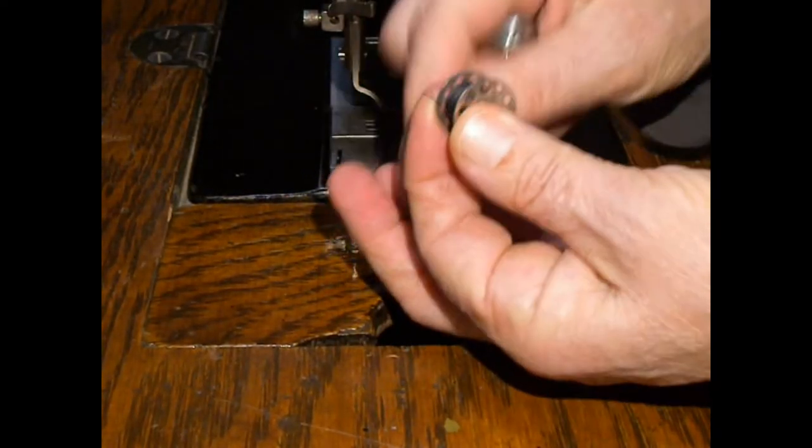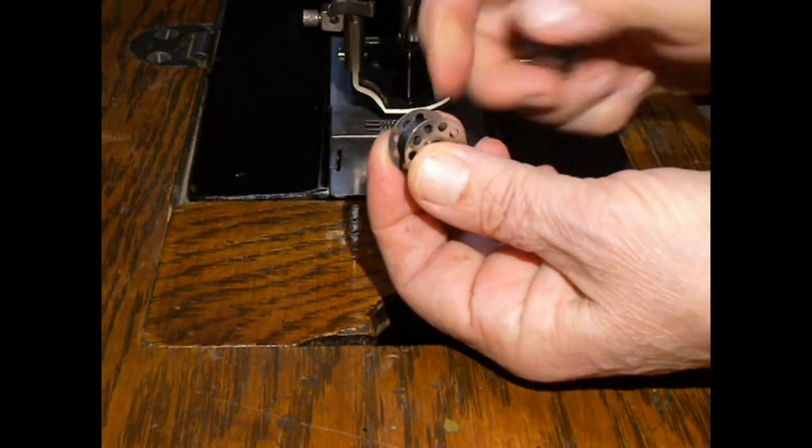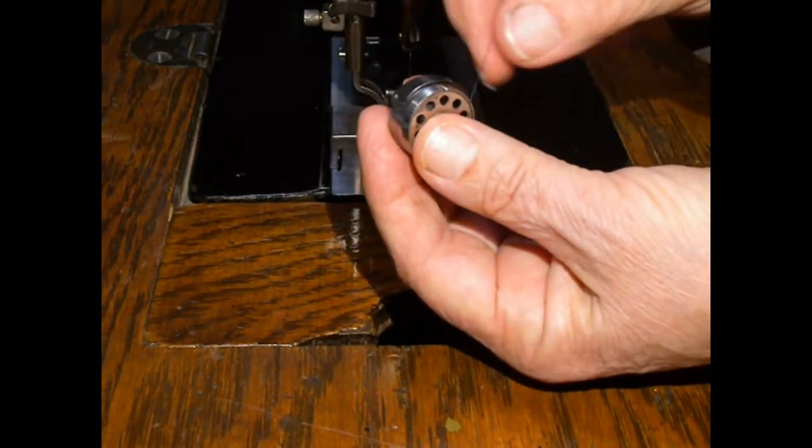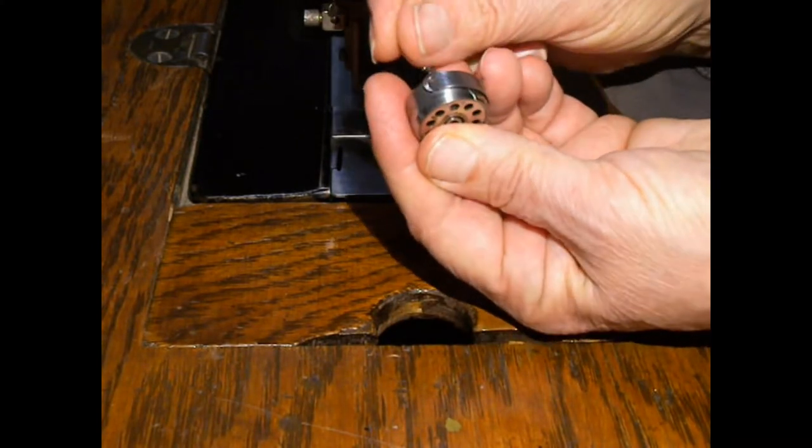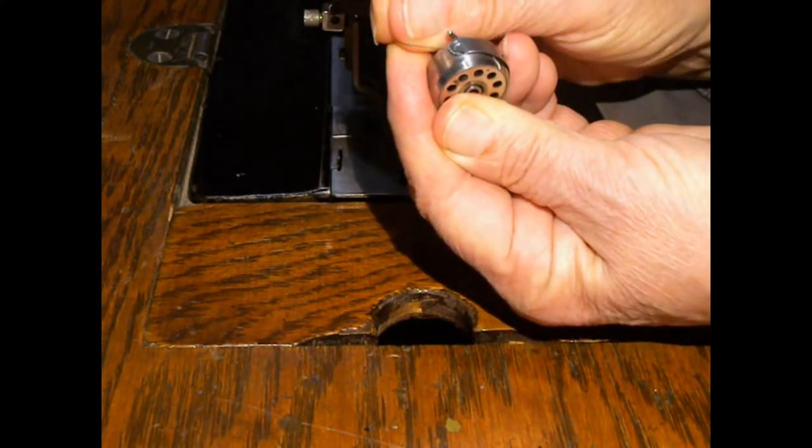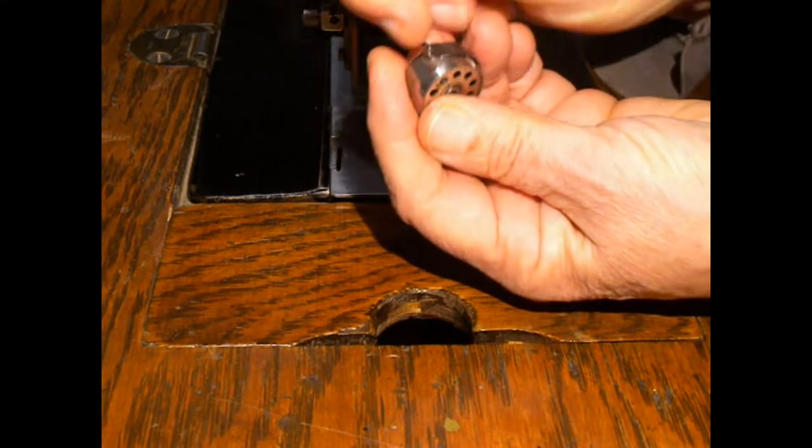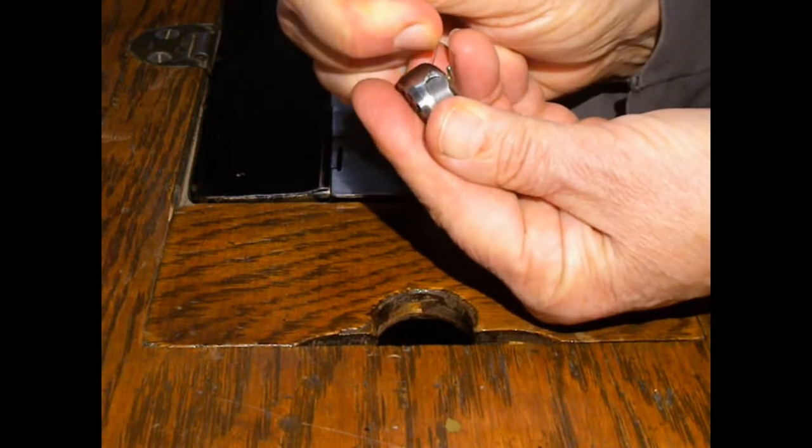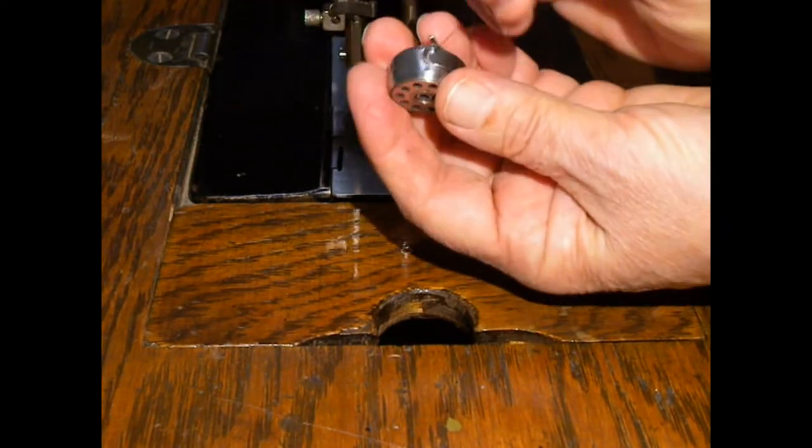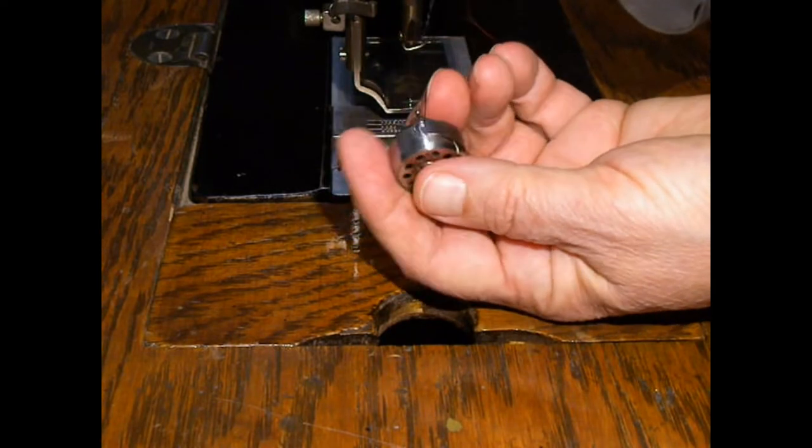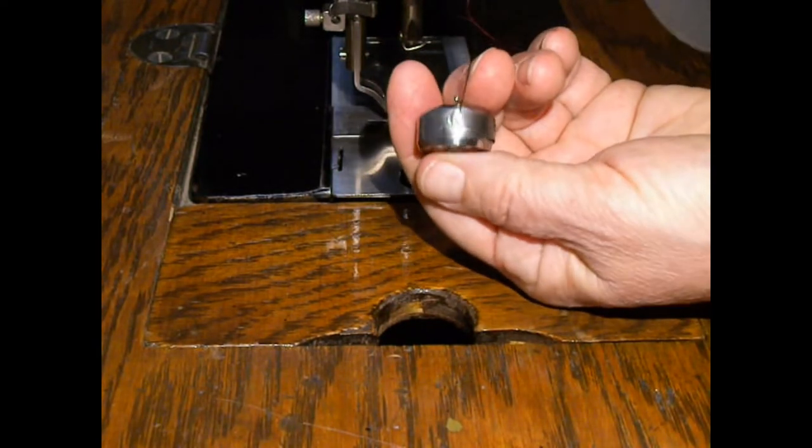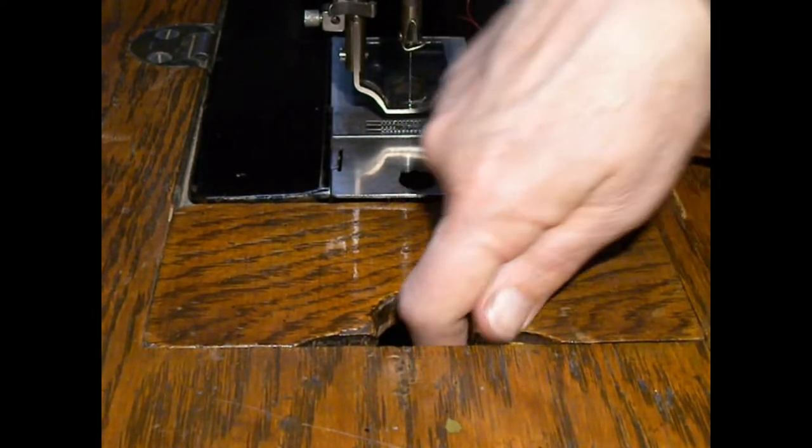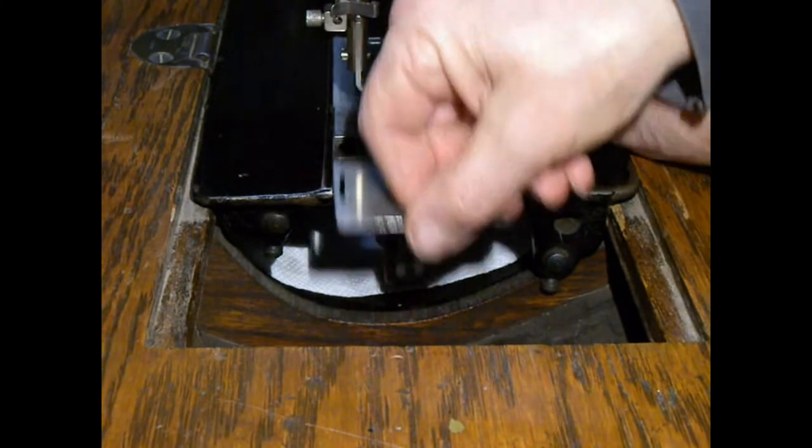Loading the bobbin in the bobbin case, you want to have your thread over the top and to the right, so clockwise. Pull it up into that little slit on the side—very typical bobbin loading. There's a little hook at the point of the tension spring. You've got to be sure to get it between that hook and the main body of the tension spring, then pull it to make sure you've got the tension you want.